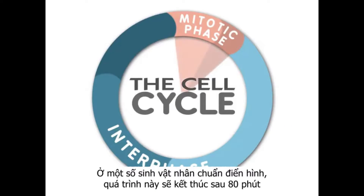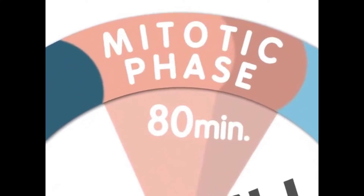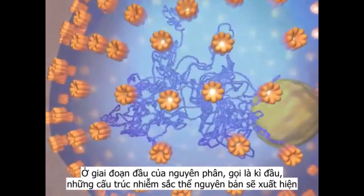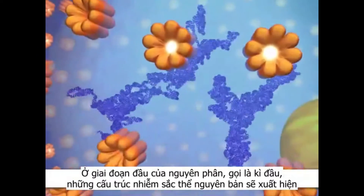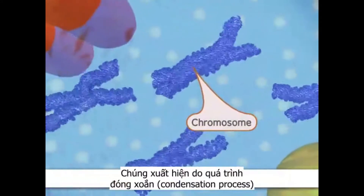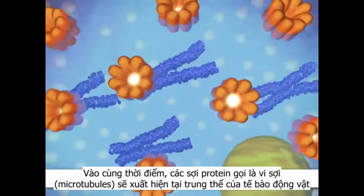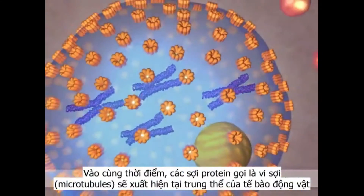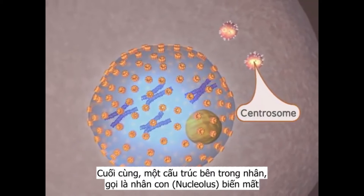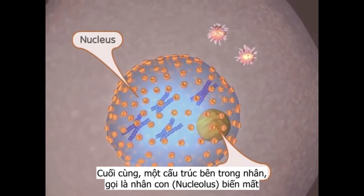For a typical eukaryotic cell, mitosis will last about 80 minutes. During the first stage of mitosis, called prophase, we first see the classic chromosome structure through a condensation process. At the same time, protein strands called microtubules appear from the centrosomes in animals. Finally, a structure found within the nucleus, the nucleolus, disappears.